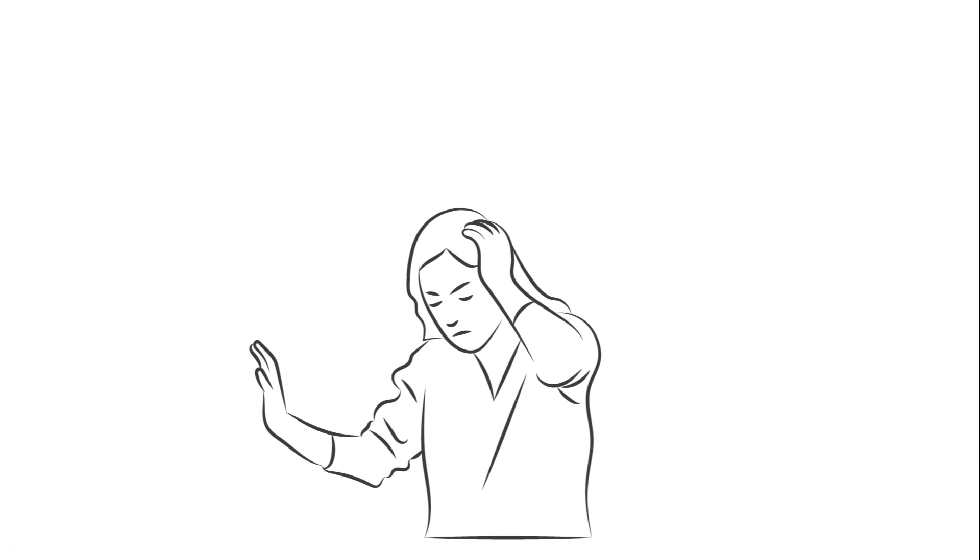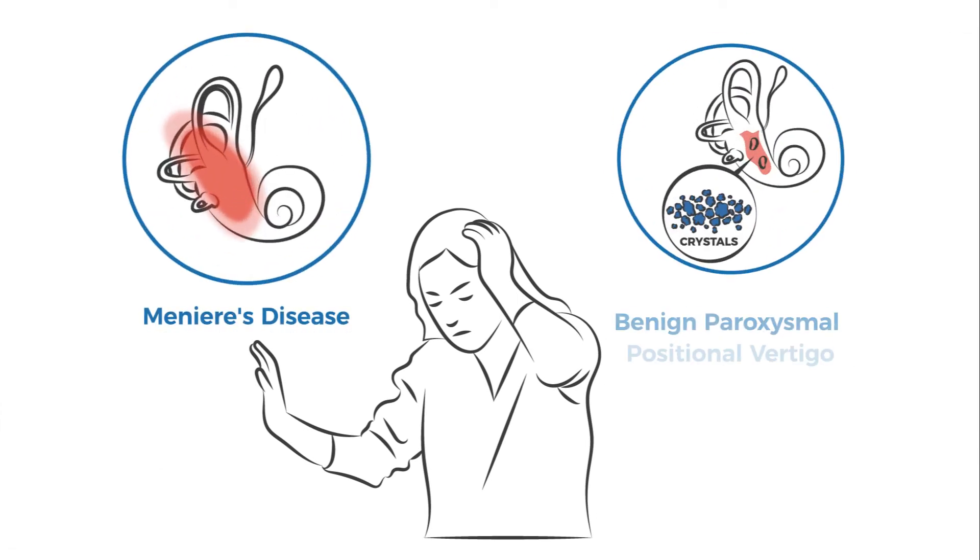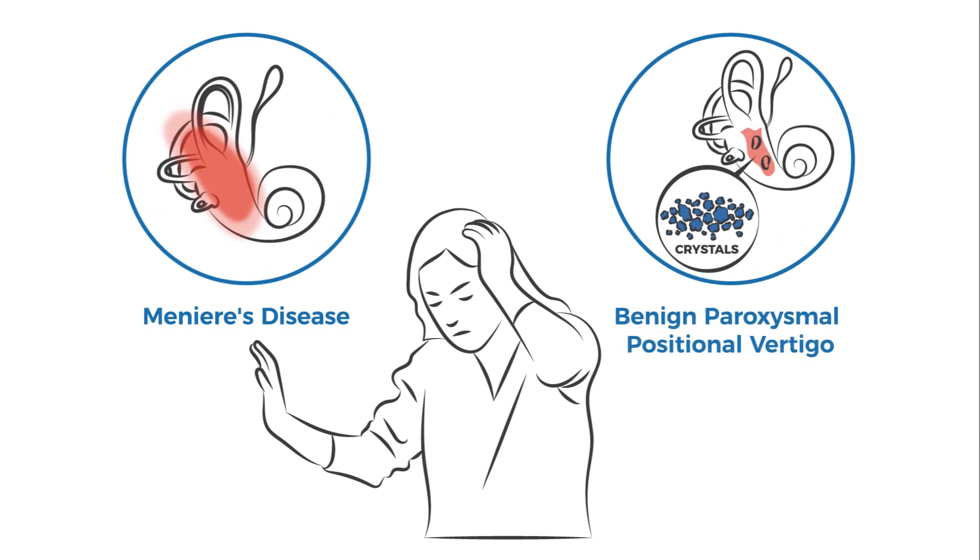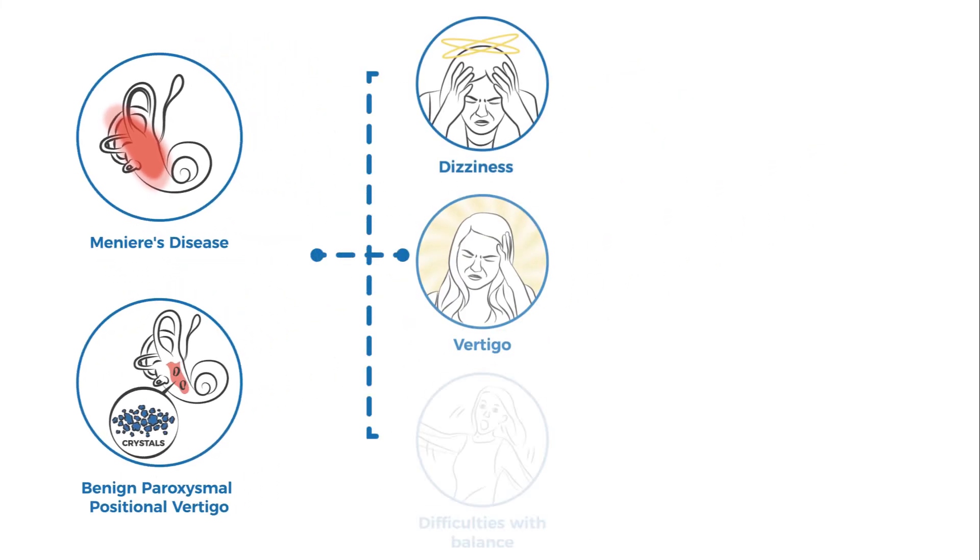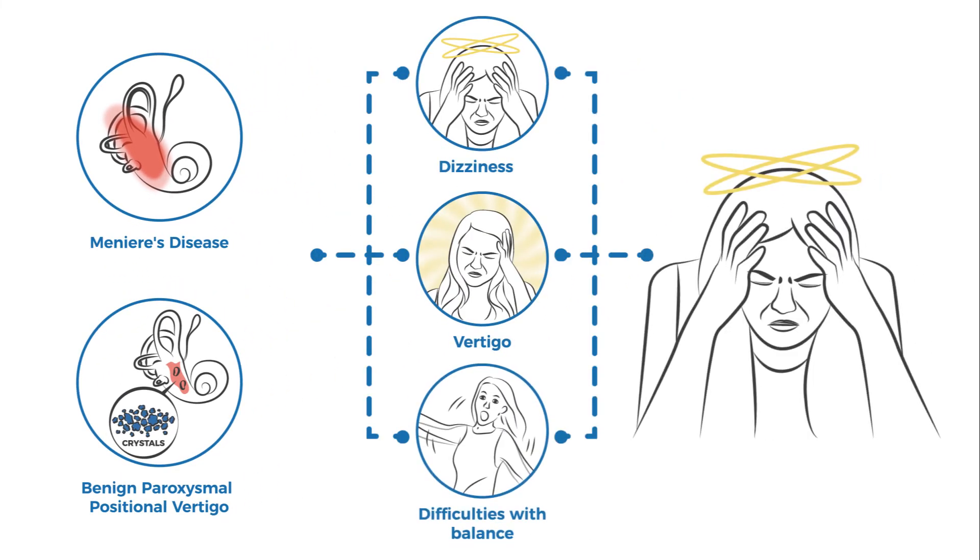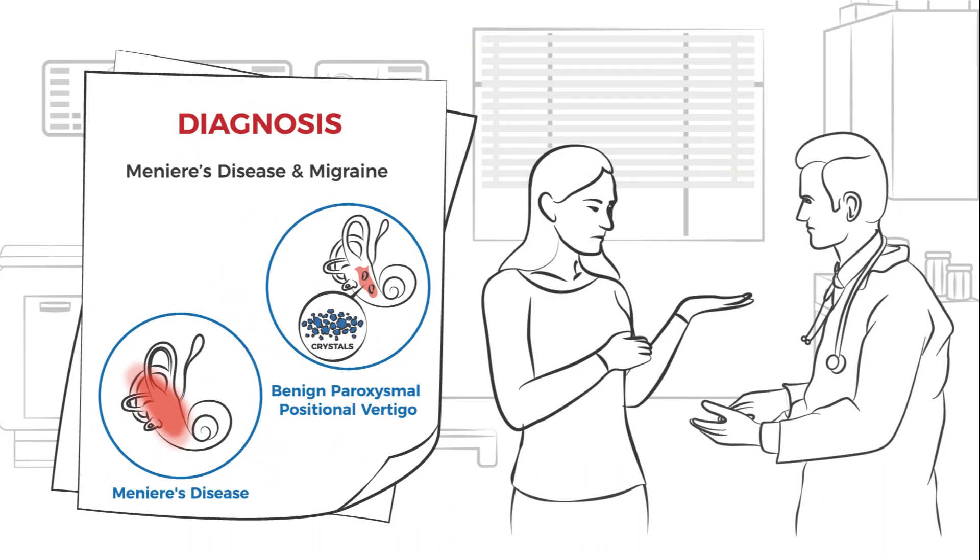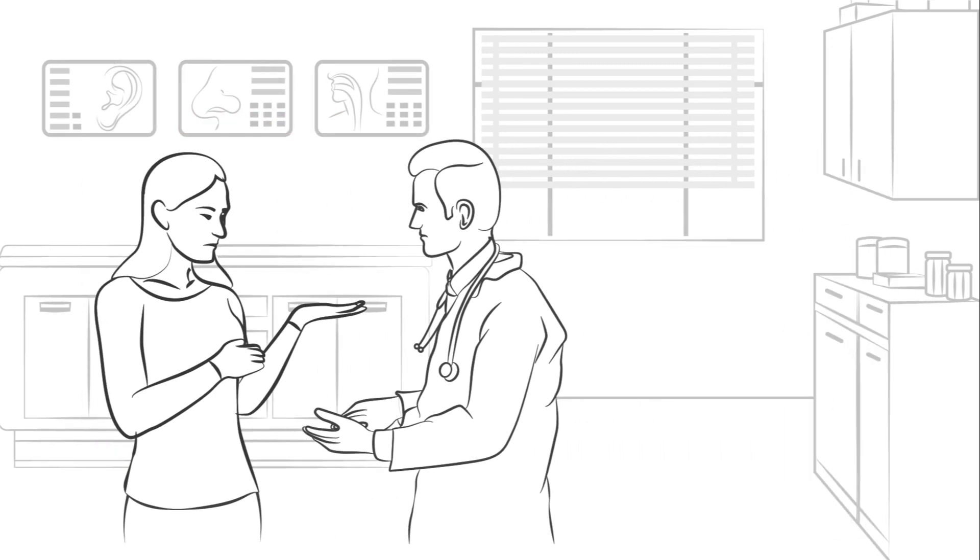Other inner ear conditions like Meniere's disease and benign paroxysmal positional vertigo have symptoms that overlap with vestibular migraine. This could be a cause for misdiagnosis. Additionally, people with vestibular migraine may also be living with more than one of these diseases.